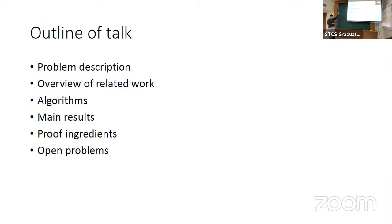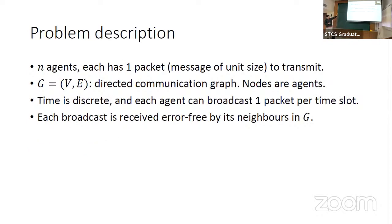I'll start with a brief overview of the problem and related work, before going on to describe the two main arguments we are going to look at, and then present some of our main results. So here's the problem: we have n agents, and for now n is fixed but eventually we are going to let it go to infinity. Each of them has one packet to transmit — one message of fixed length — and they are communicating over some graph. The model is broadcast, not point-to-point links: when one node sends a message, all its neighbors in the graph hear it simultaneously in that time slot.